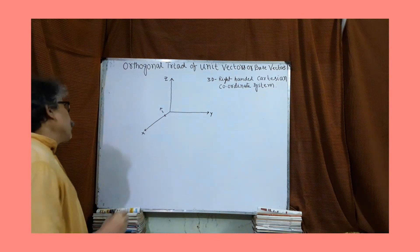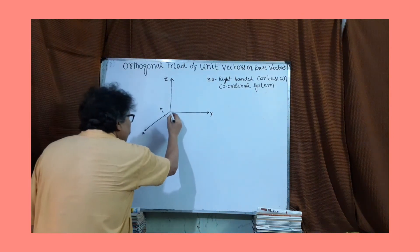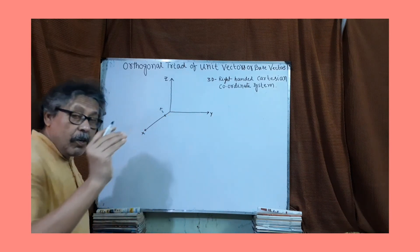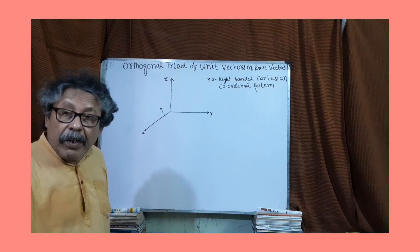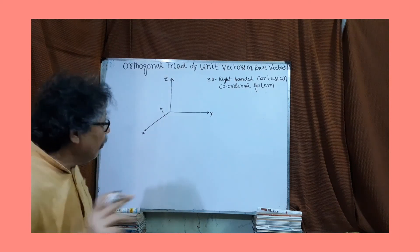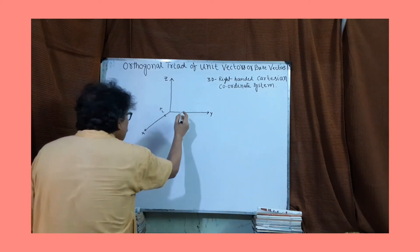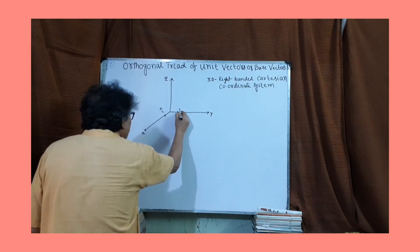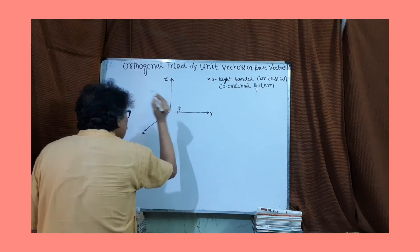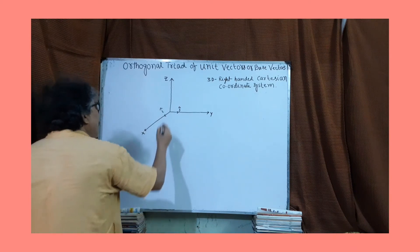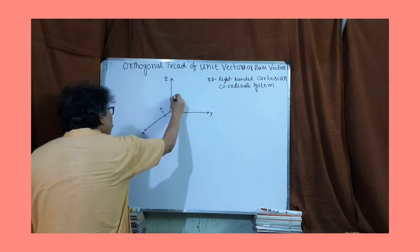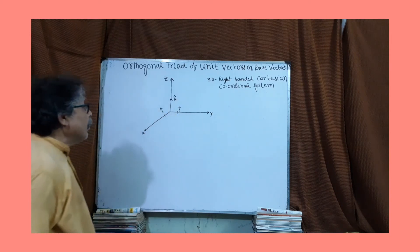Along the y-axis, we choose a unit vector - unit vector whose magnitude is unit but has a direction. In the y-direction, we choose j-cap as unit vector. And along z-axis, we choose k-cap as unit vector.